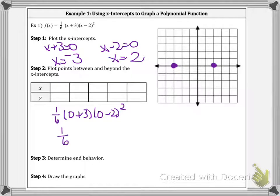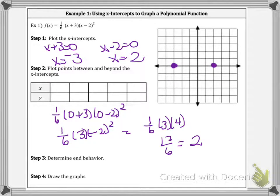This is one-sixth times 3 times negative 2 squared, or one-sixth times 3 times positive 4. So this is 12 over 6, or that is positive 2. Our y-intercept is at 2.